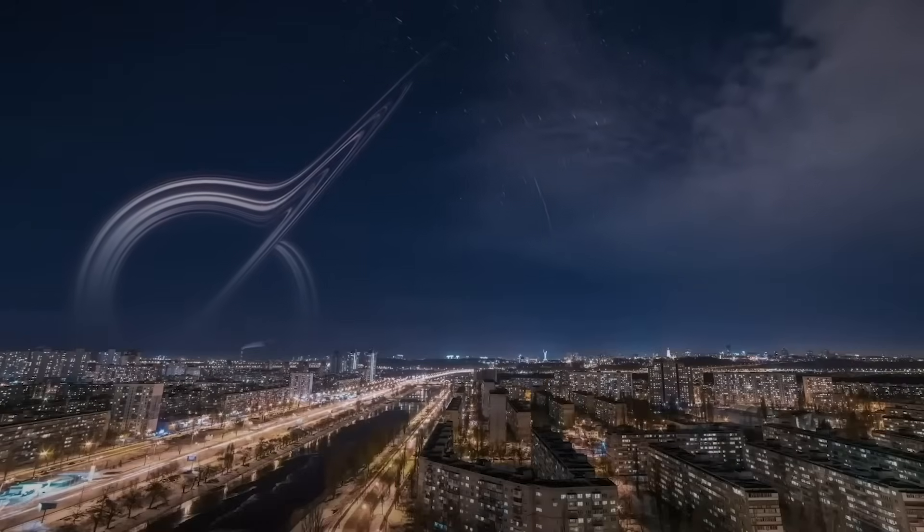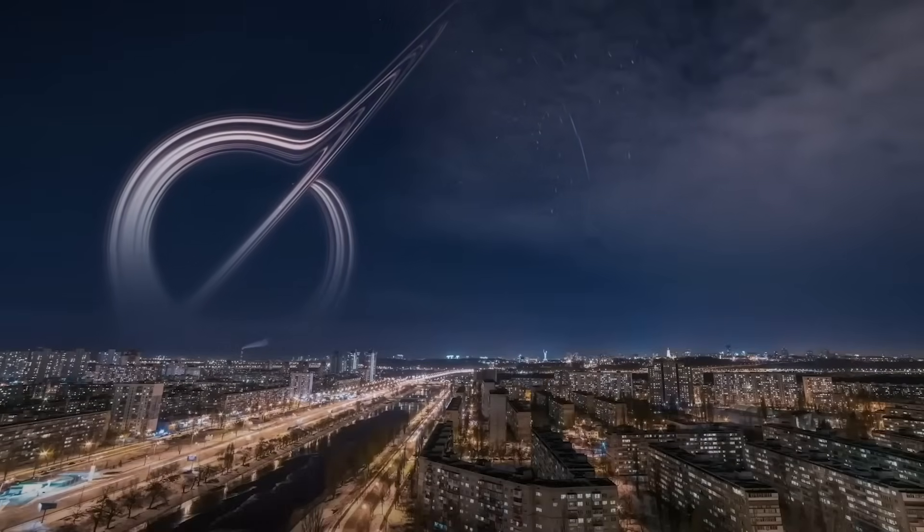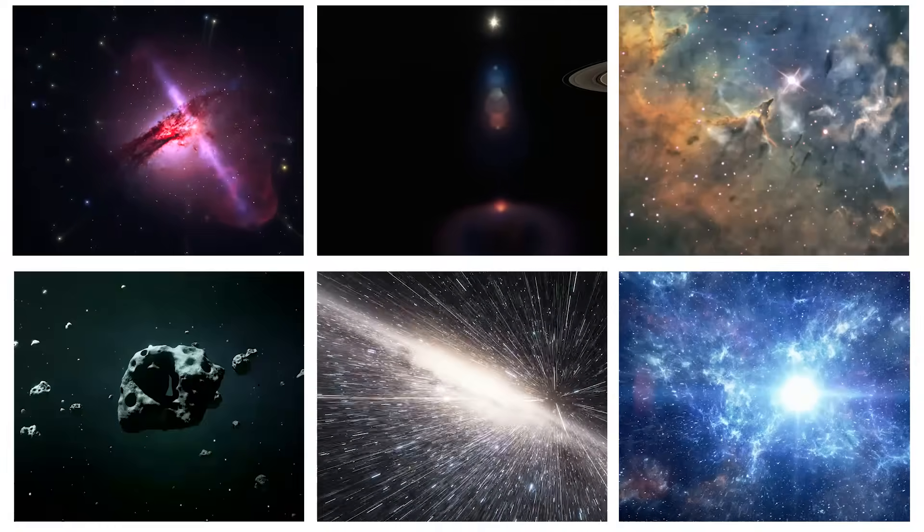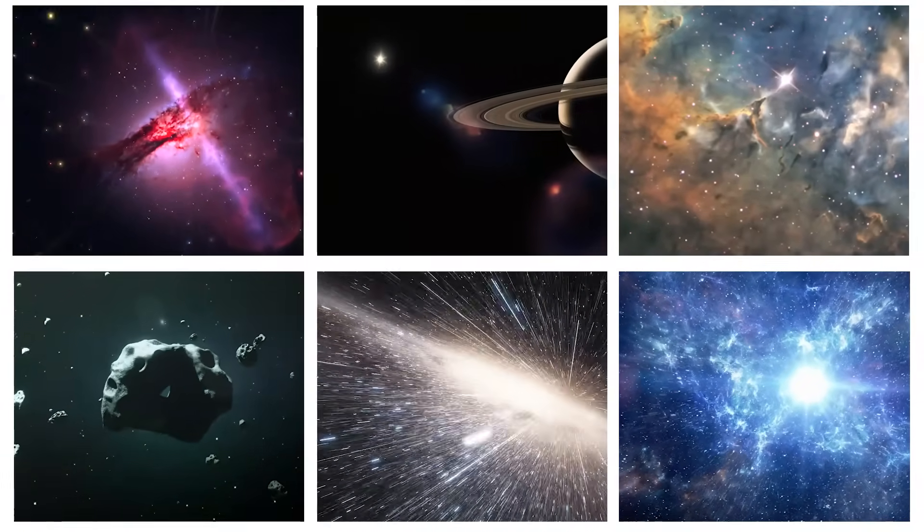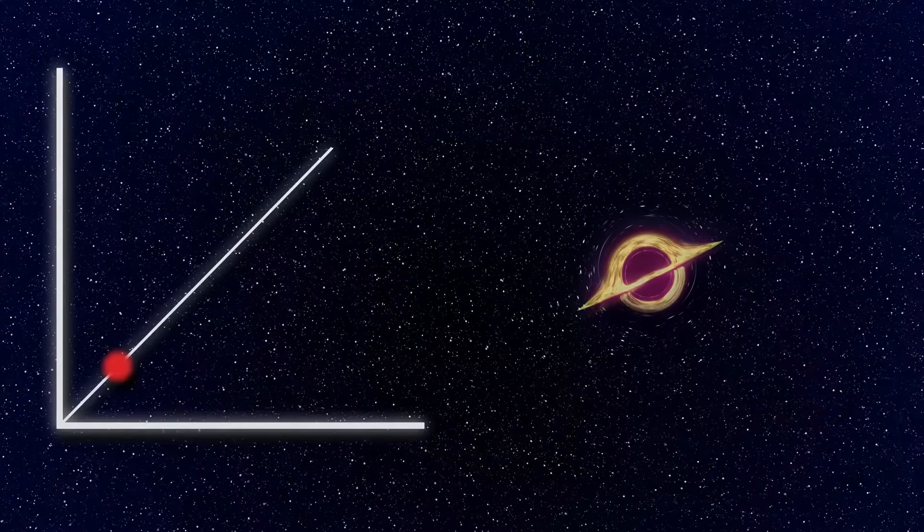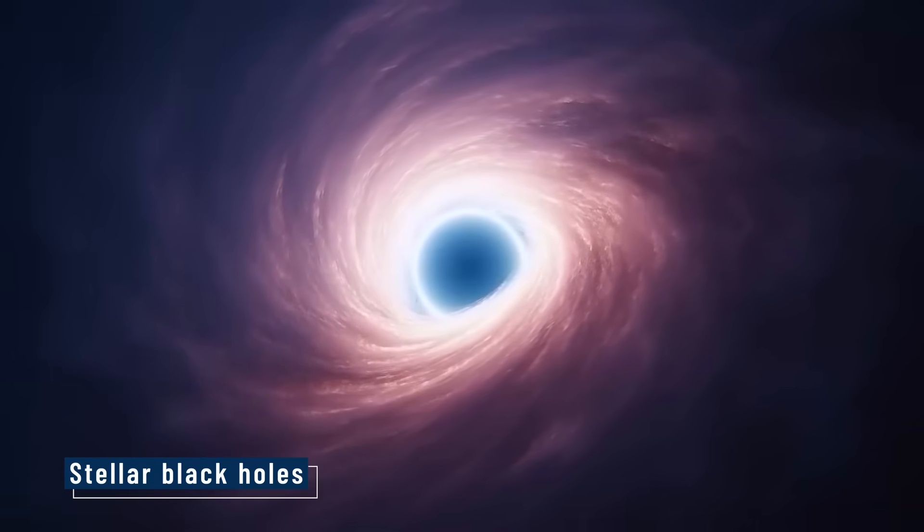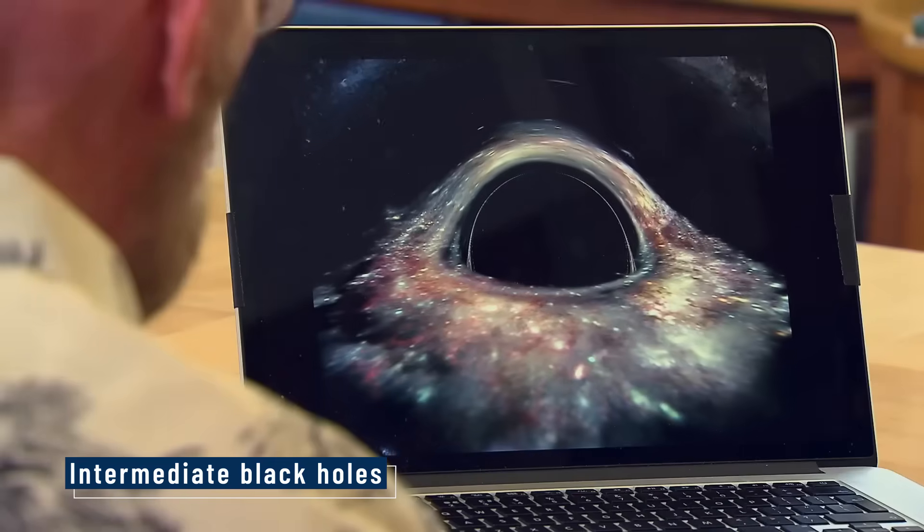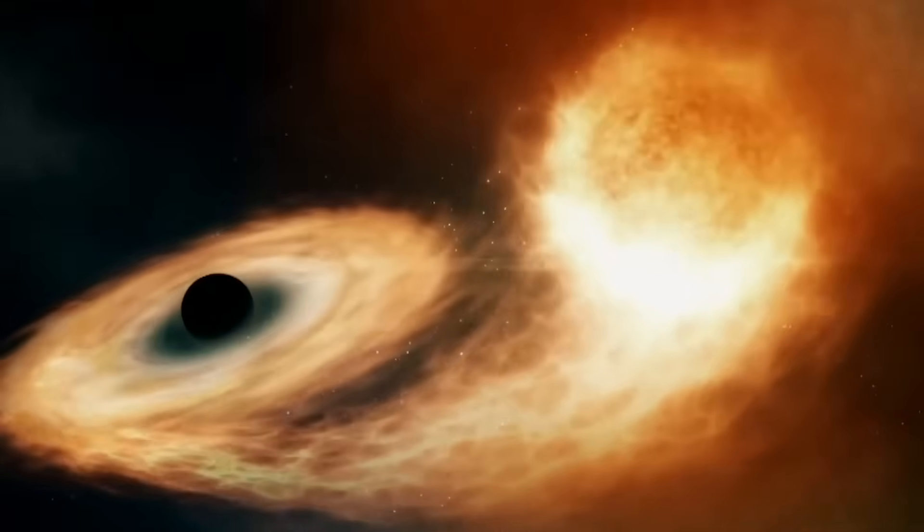Even though they're invisible, we know they're out there because of how they affect everything around them. They pull on nearby stars, twist light, and can even trigger X-ray blasts as they devour gas clouds. There are several kinds. Stellar black holes are the smallest, formed from a star just a few times the size of our sun. Intermediate black holes are rarer and heavier, thousands of times more massive.